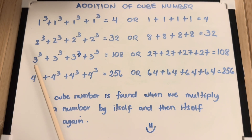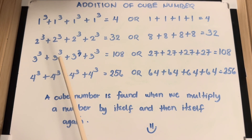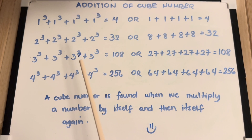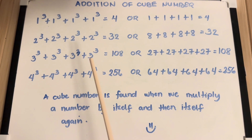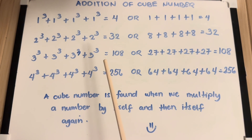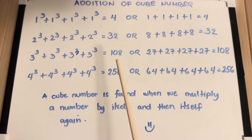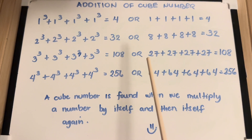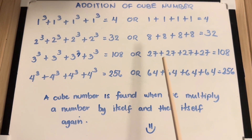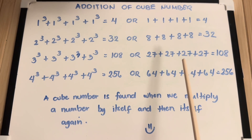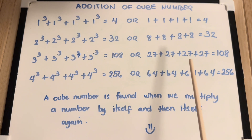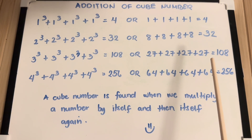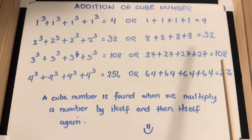3 cube plus 3 cube plus 3 cube plus 3 cube is equals to 108. Or 27 plus 27 plus 27 plus 27 is equals to 108.